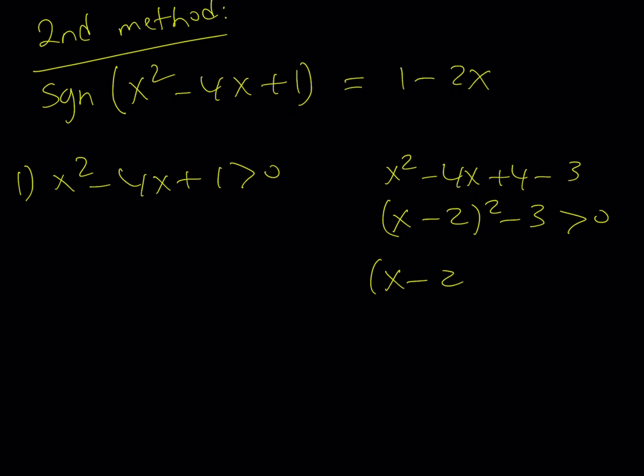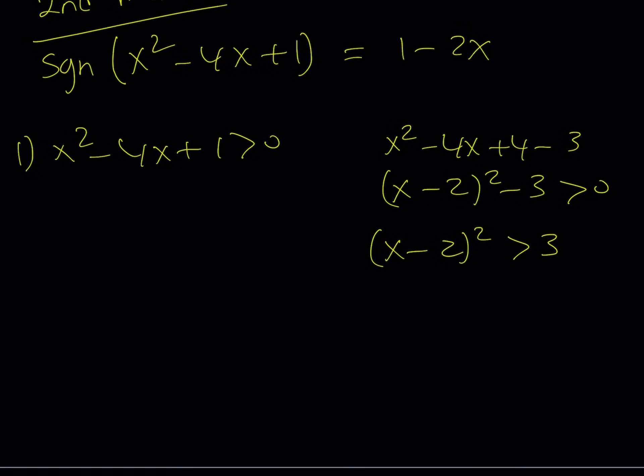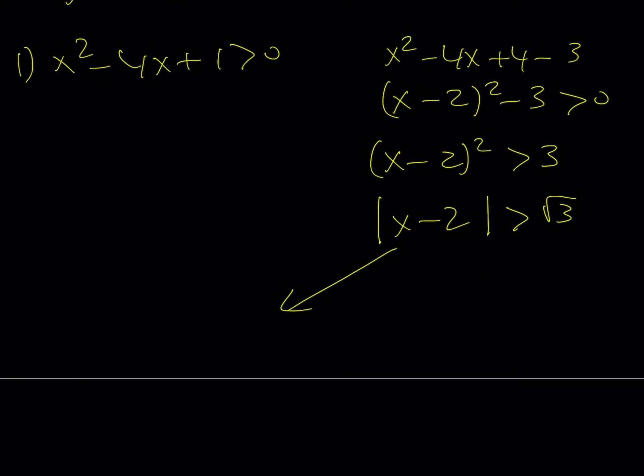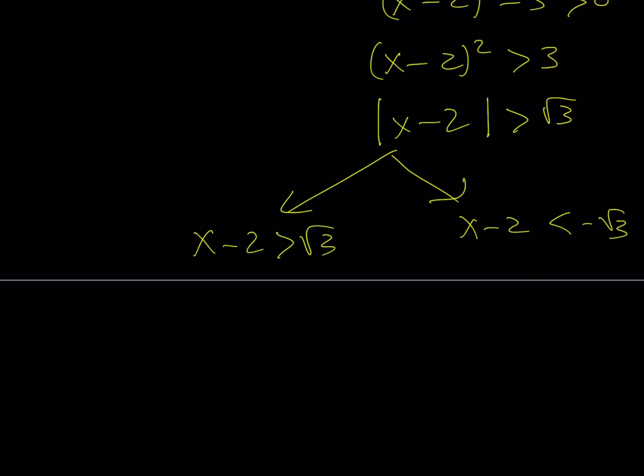It means that x minus 2 quantity squared is greater than 3. If you take the square root of both sides, remember, you've got to use the absolute value, and you get the following. And this just means that you get two solutions because you have to split them up like this and like that. You know, with the absolute value, when you have greater than, you have to split it up into two pieces that are separate. This is going to be x is greater than root 3 plus 2, and this is going to be x is less than 2 minus root 3.